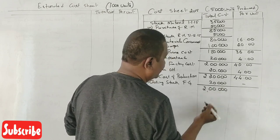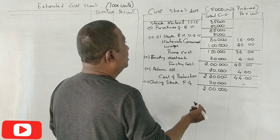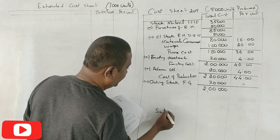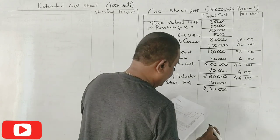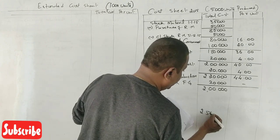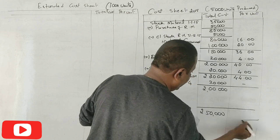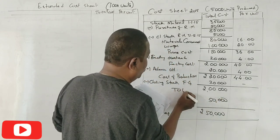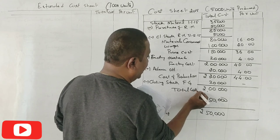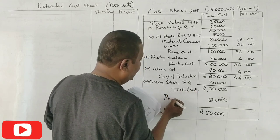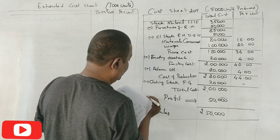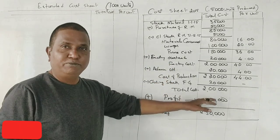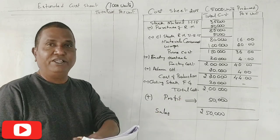After deducting closing stock of finished goods, this becomes ₹2,00,000 total cost. Sales is given as ₹2,50,000. If ₹2,50,000 is the sales, what is the profit? ₹50,000. This is total cost and this is called profit. Profit always should be added. So total becomes ₹2,50,000.